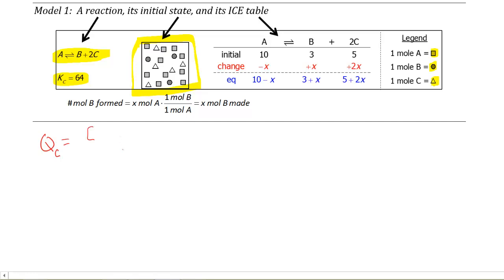It's the concentration of B multiplied by the concentration of C squared divided by the concentration of A. If we plug that in, we get 3 times 5 squared divided by 10. That's 25 times 3, that's 75. I get 7.5 as my answer. And what I know is that Q sub C is less than K sub C, so I'm going to shift to the right.